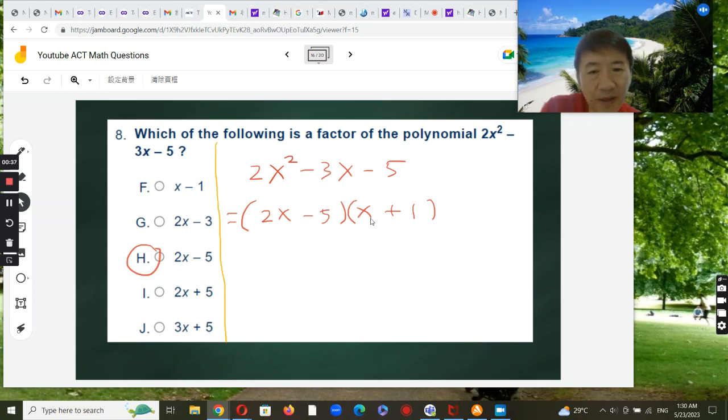What is the constant we need in each of them? The last constant term is -5, so that means it has to be -5 and 1, or +5 and -1.